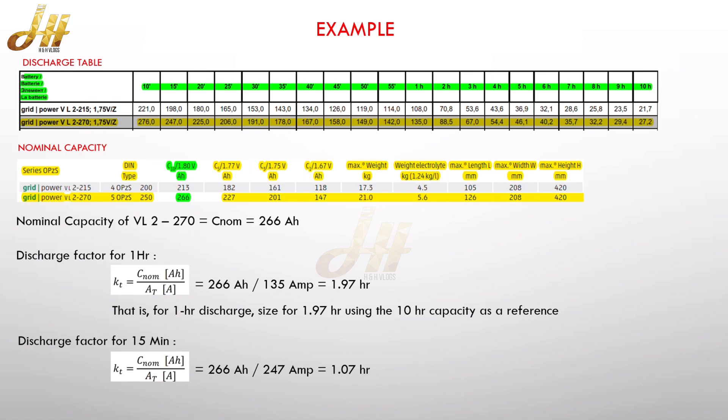As we said earlier, we will go for another example. In this case, I am going with another model number VL2-270. The normal capacity of this battery is 266 Ah. So how we can calculate the discharge factor for one hour? We can take this value from the above chart, which is 135 ampere. So if you divide 266 Ah divided by 135, which is equal to 1.97.